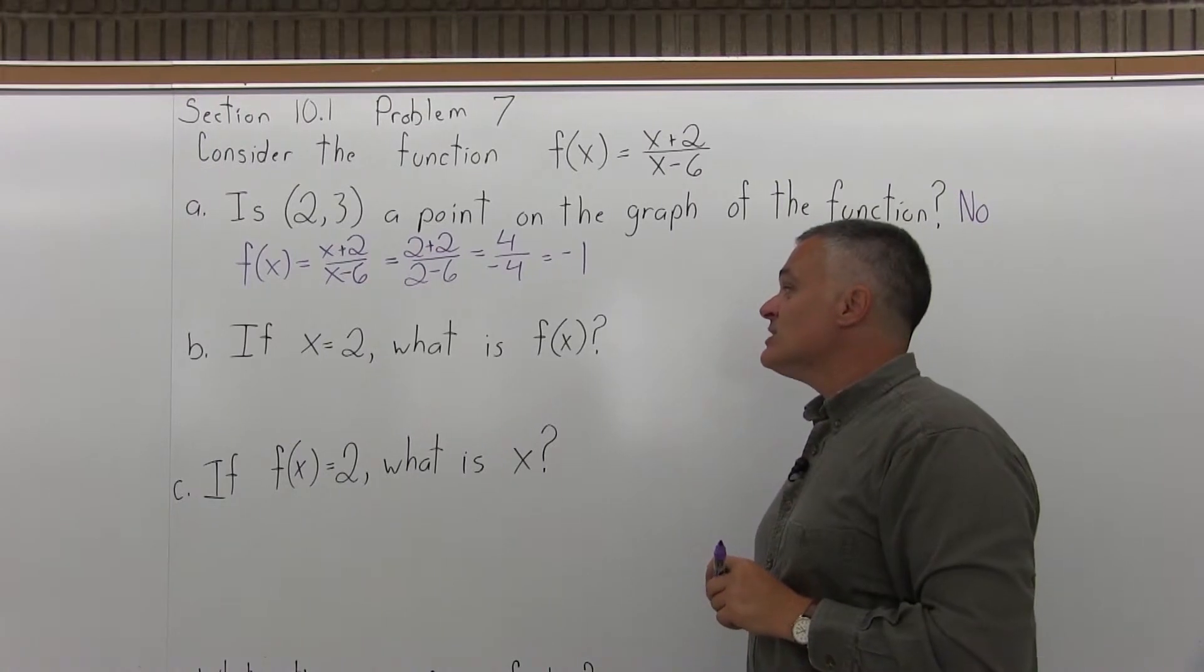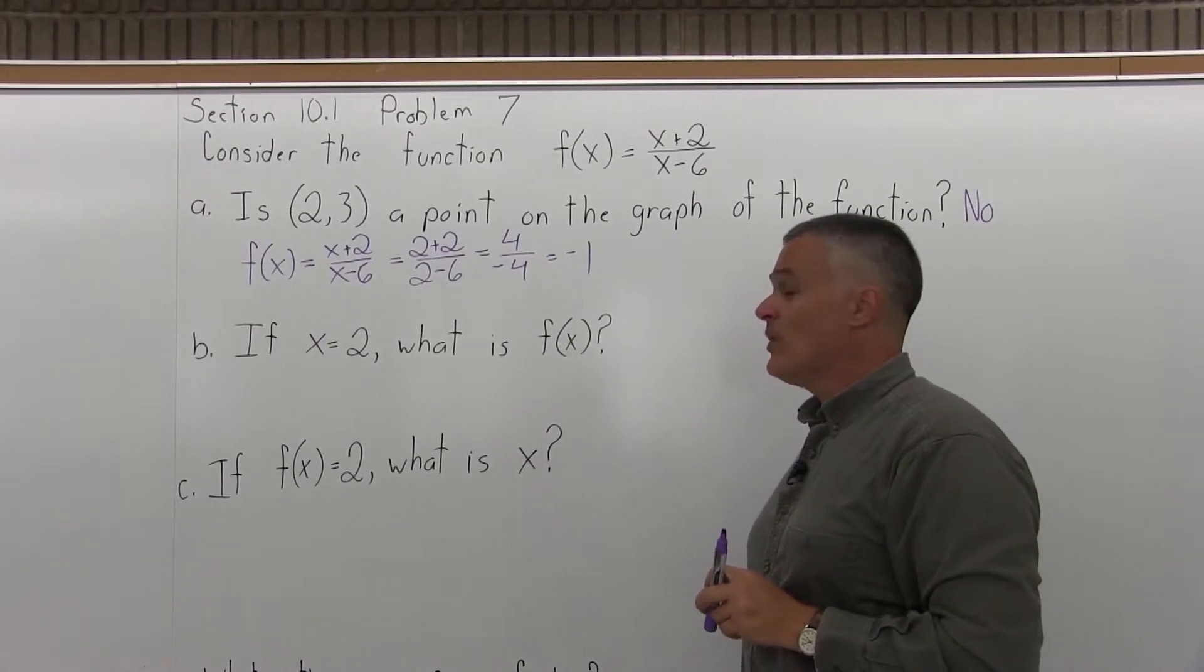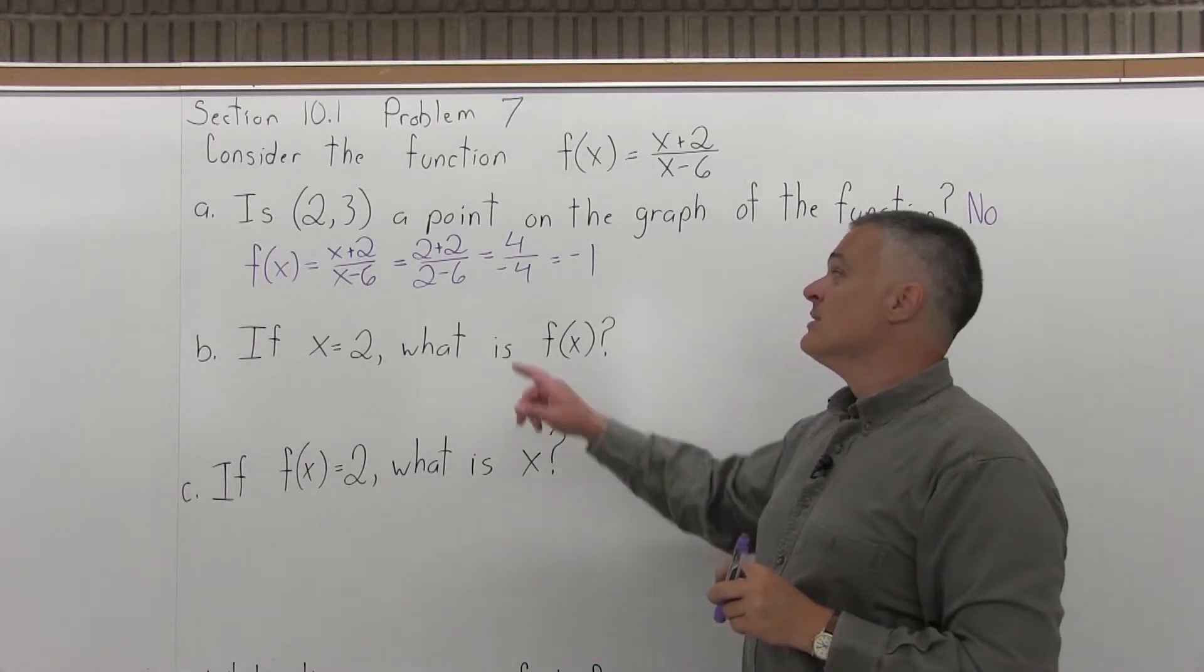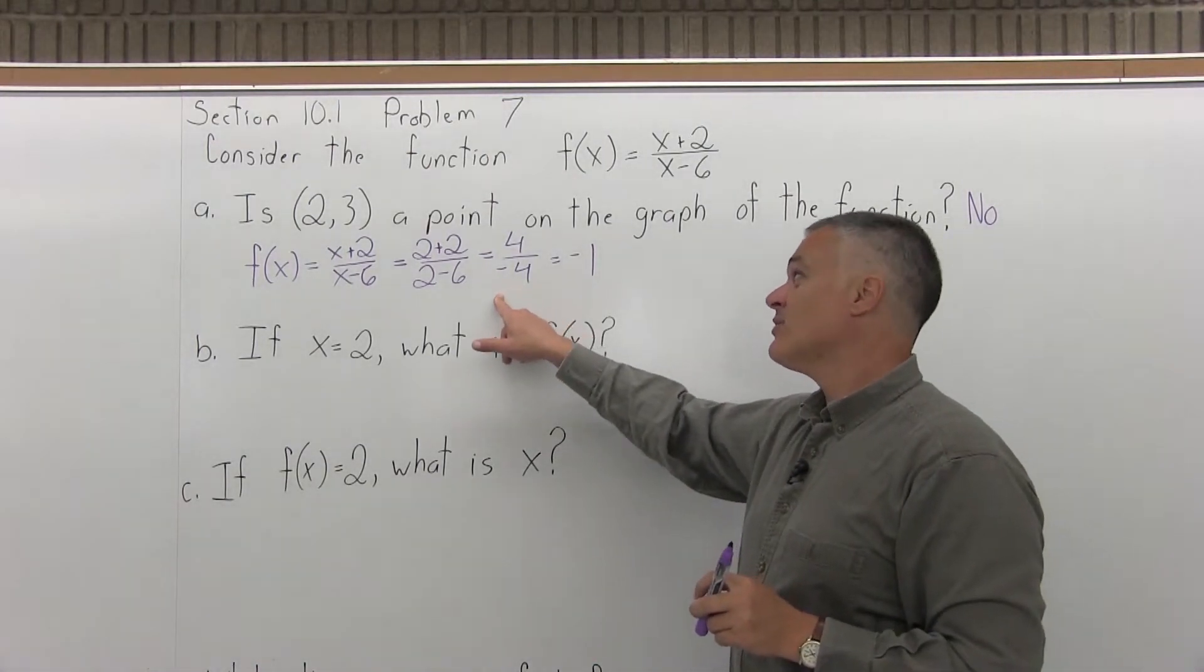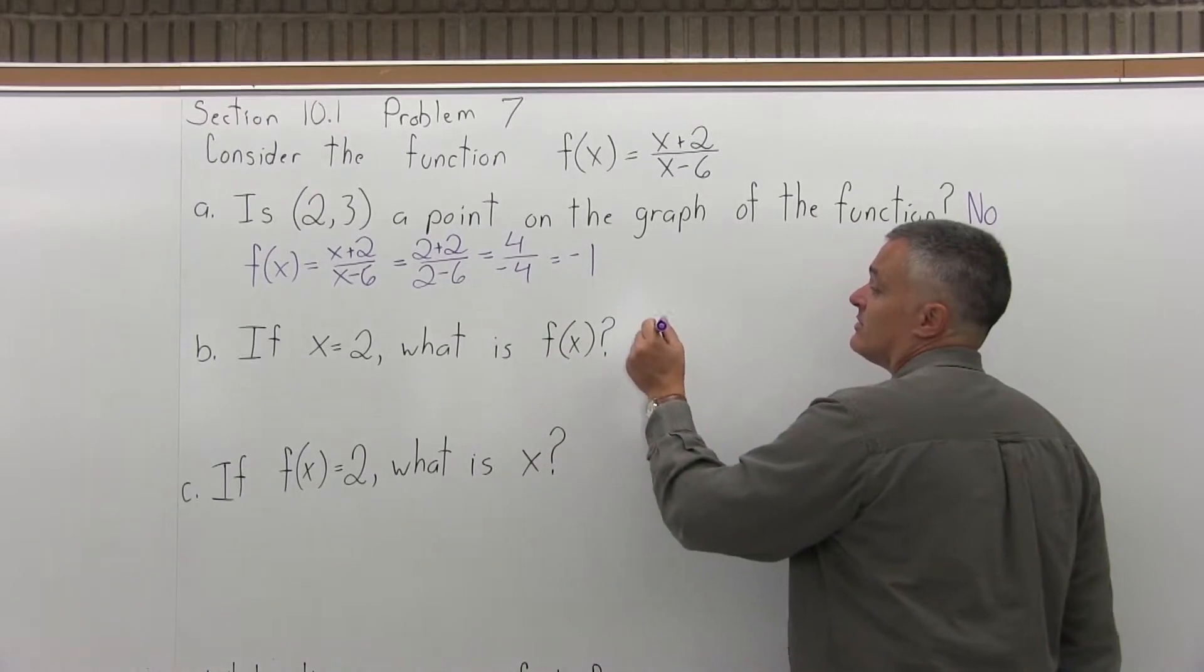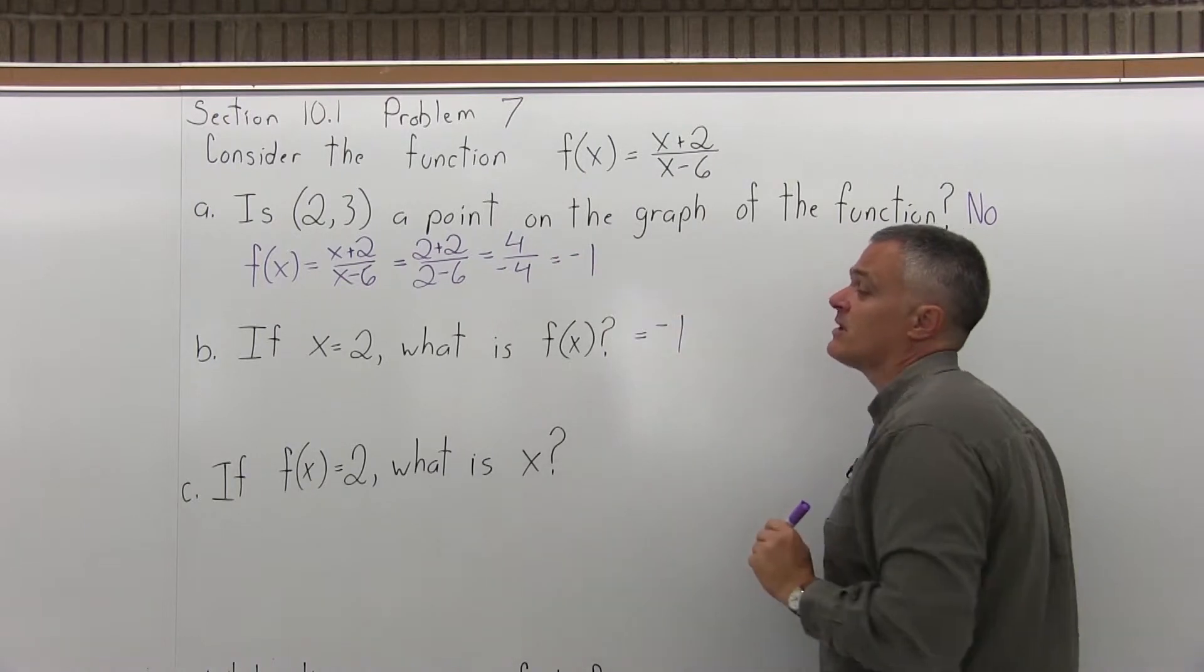Part B says if x is 2, what is f(x), which is asking if you put in a 2, what do you get out? Well, actually, the answer to part A we had figured out: if we put in a 2, we'd get out a negative 1. So there's no need to do the work over again.